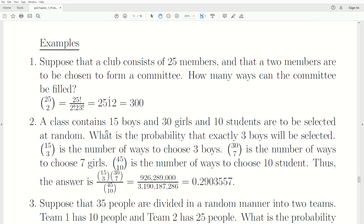A class of 15 boys and 30 girls and 10 students are to be selected at random. What is the probability that exactly three boys will be selected? Now here, we're going to use the multiplication rule. First, we're going to select the boys. We have to have three boys, at least that's the probability we're looking for. So it's 15 choose 3.